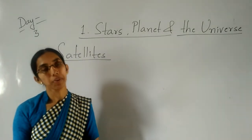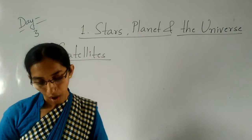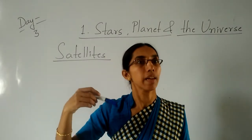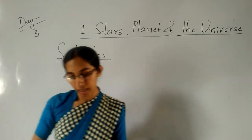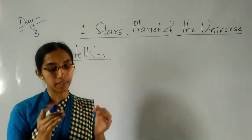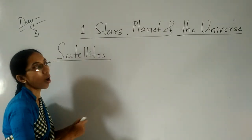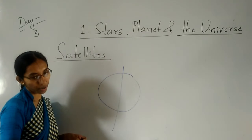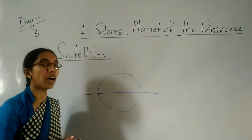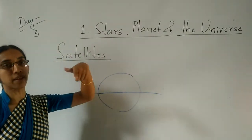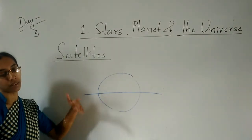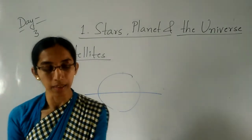One more thing to learn: Venus is the only planet that rotates itself from east to west. And Uranus rotates sideways, which means it exists nearly horizontally. Venus rotates from east to west and Uranus rotates sideways, meaning it rotates nearly horizontally. Clear children?